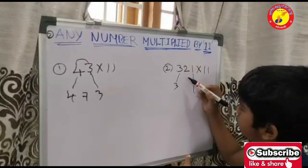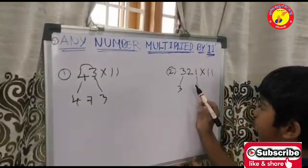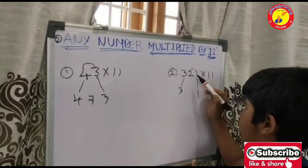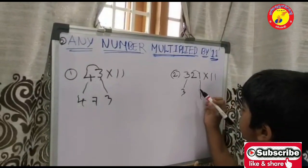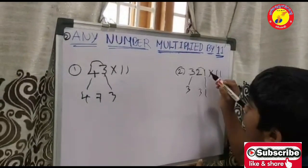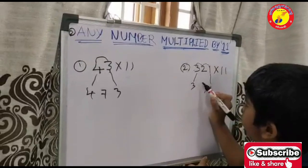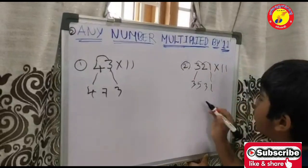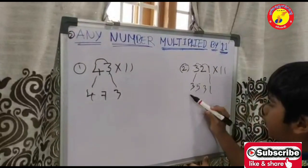And leave some space in the middle. Now, add these two numbers. 2 plus 1 is equal to 3. 2 plus 3 is equal to 5. This is the answer.